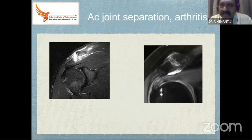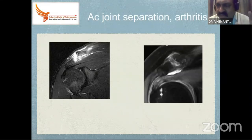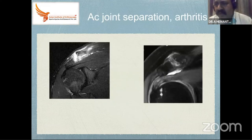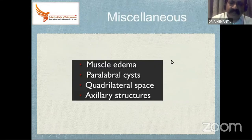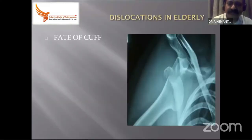What we sometimes miss when reporting an MRI is the AC joint. Pain is mostly during night time and acute localized tenderness can be seen. AC joint separation of mild grades and AC joint arthropathy can also be identified. Miscellaneous structures include muscle edema, paralabral cysts, and axillary structures.